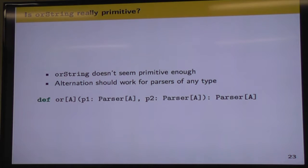But at this point we should probably be asking ourselves, is orString really a primitive? And no, it's not really. So what we were trying to capture with orString was the idea of alternation. We want some string or some other string. But there's nothing special about strings in that case. We're really just trying to capture the idea of parsing some value or some other value. So it should really work with parsers of any type. So we refined our primitive and made it a real primitive. And we have OR parameterized on some type A.